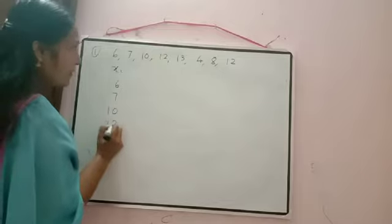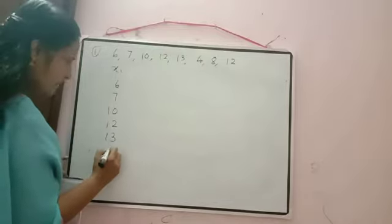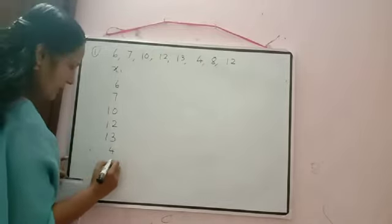The observations given are: 6, 7, 10, 12, 13, 4, 8, 12. Only observations xᵢ are given. It will be easy if we write the observations in vertical order, so that addition can be done here only. Writing xᵢ vertically: 6, 7, 10, 12, 13, 4, 8, 12. First we have to add all the observations — Σxᵢ.